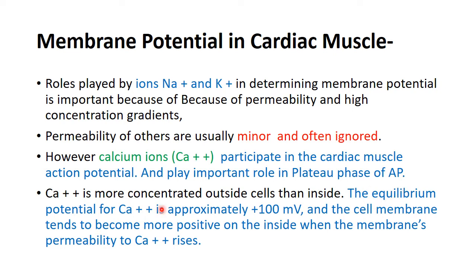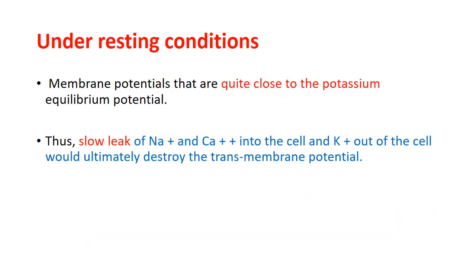The equilibrium potential for calcium is plus 100 millivolts. Under resting conditions, the membrane potential is quite close to the potassium equilibrium potential. At this point, there is a slow leak of sodium and calcium ions entering into the cell, which is slow compared to potassium efflux and ultimately disturbs the transmembrane potential.